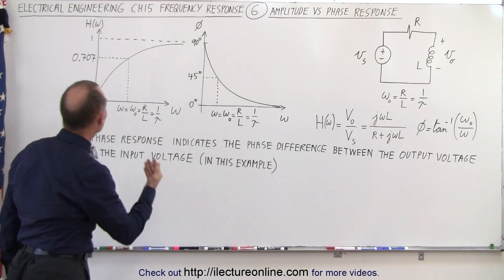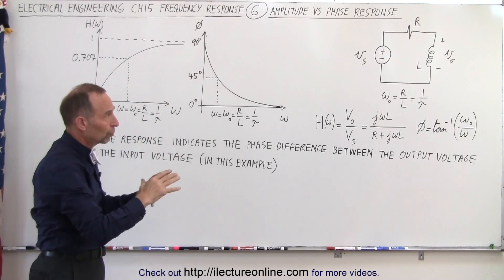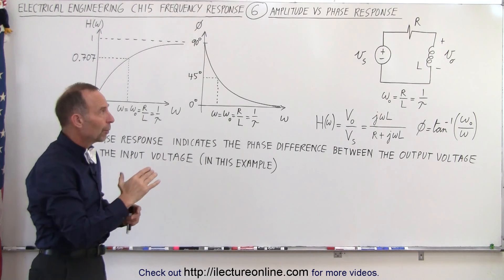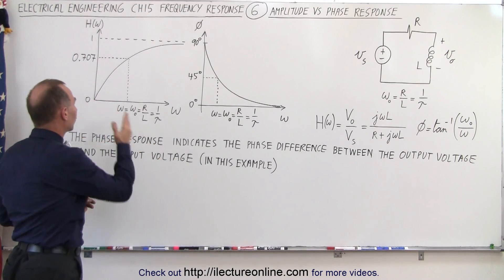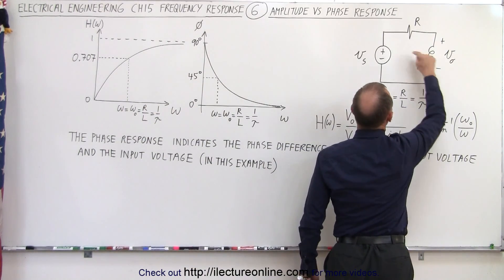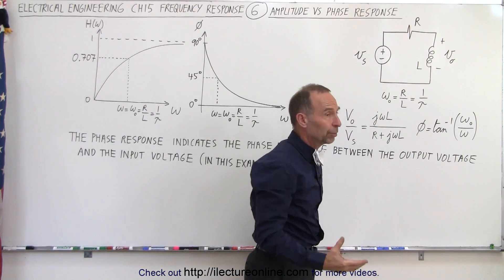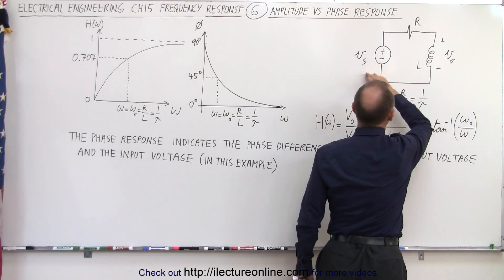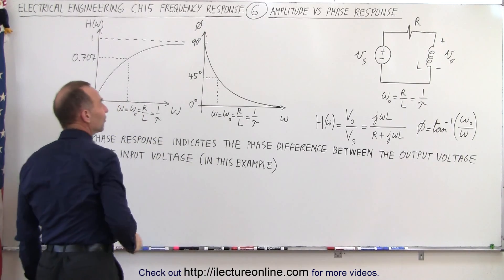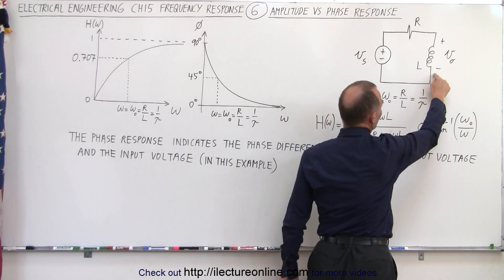The amplitude response is simply going to be a function of the frequency. An inductor has a greater opposition to current flow when the frequency is very high, and very small opposition when the frequency is very low. When the frequency goes to zero, there is zero opposition to current flow, so the current will flow through the inductor unhindered and there'll be no voltage drop across the output. Therefore the amplitude response will be zero when the frequency is zero. As the frequency increases, the opposition to current change will be greater.